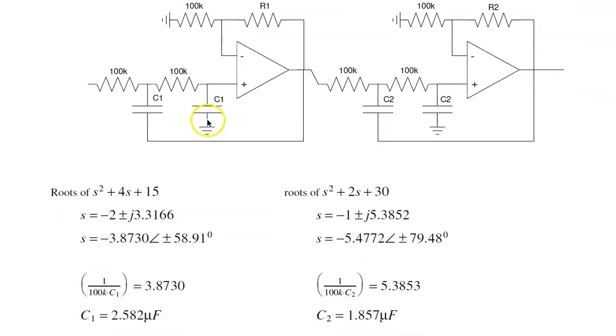To find the terms, I'll take the first pole. The angle of pole is 58 degrees, or amplitude of the pole is 3.87. 1 over RC is the amplitude. So 1 over RC is 3.87, so it's 2.5 microfarads. Over here, the amplitude is 5.4. 1 over RC is 5.47.